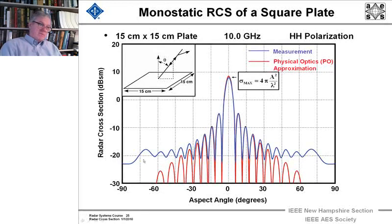But they are a contribution that is just not there with the physical optics approximation. And what we see also that both theories predict that the maximum cross section at broadside is 4 pi times the area squared divided by lambda. And this is a 15 by 15 centimeter plate at 10 gigahertz with horizontal polarization on transmitted and received.